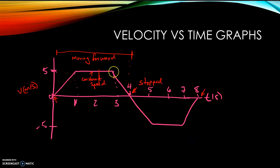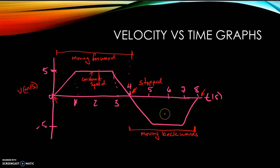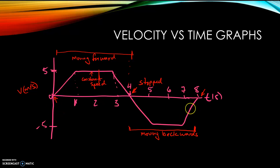So the object is moving forward, slowing down, then stops momentarily. Once it has a negative velocity — from here all the way through here — it's moving backwards. The line has a negative velocity, meaning it's moving in the negative direction, going faster and faster. Then this flat section means it's moving at constant speed backwards. Then there's a positive slope, but it's still moving backwards — slowing down until it stops again.